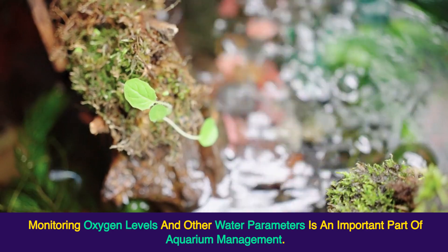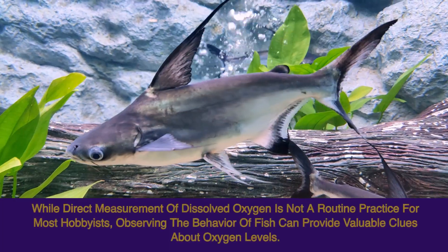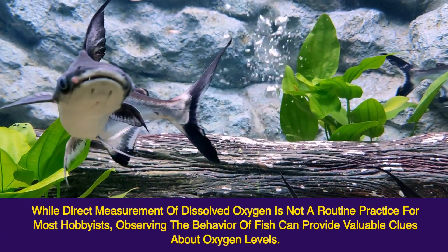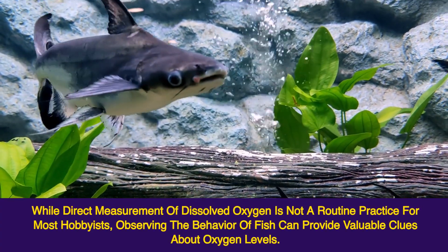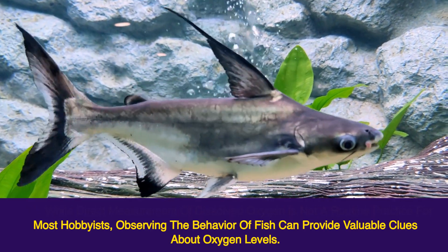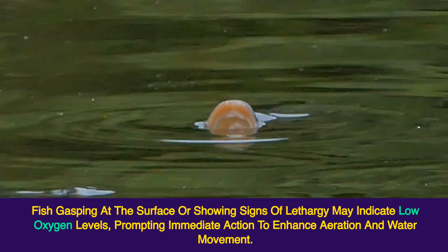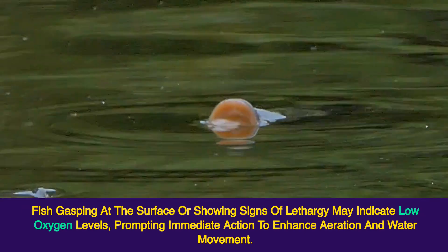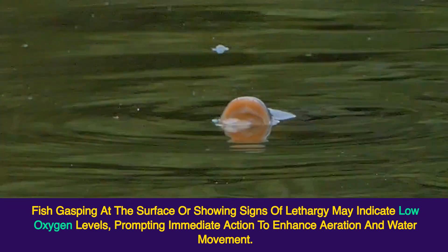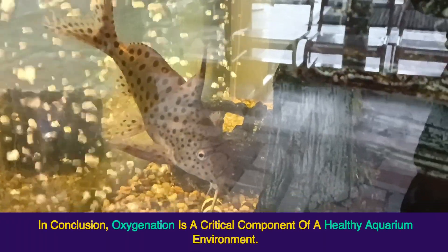Monitoring oxygen levels and other water parameters is an important part of aquarium management. While direct measurement of dissolved oxygen is not a routine practice for most hobbyists, observing the behavior of fish can provide valuable clues about oxygen levels. Fish gasping at the surface or showing signs of lethargy may indicate low oxygen levels, prompting immediate action to enhance aeration and water movement.